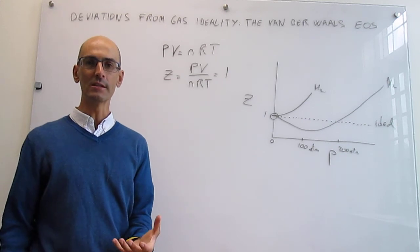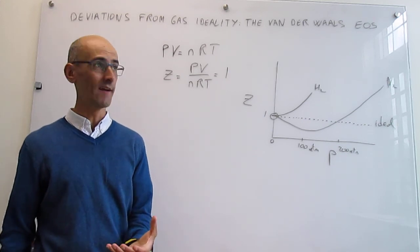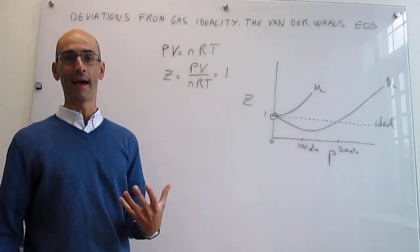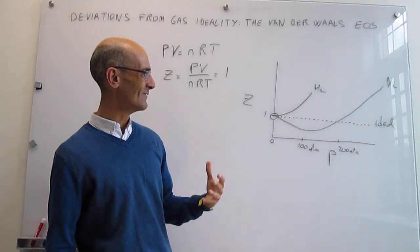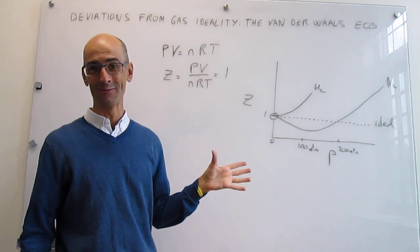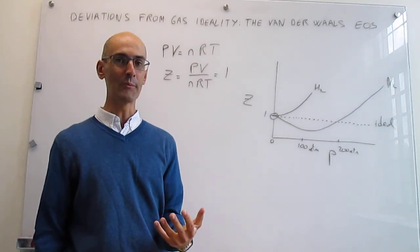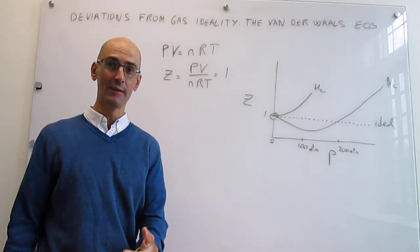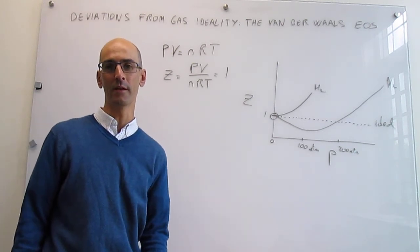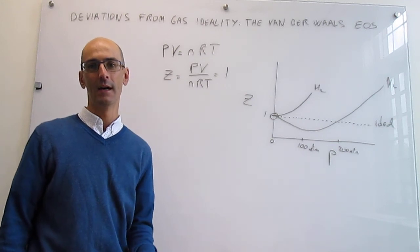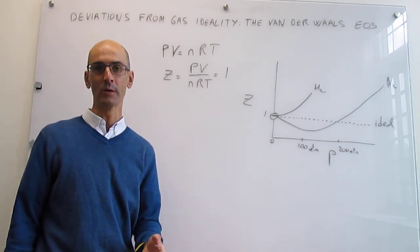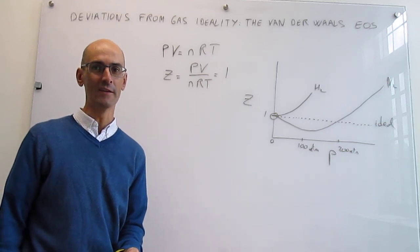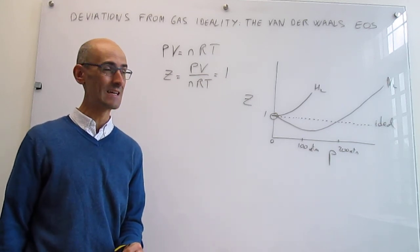The question is: are there equations that transcend the ideal gas equation of state and allow us to study gases not only under ideal gas conditions but also at higher pressures where breakdowns of ideality are important? The answer is yes, and one of the more important ones available is the Van der Waals equation of state. For this work, Van der Waals received the Nobel Prize in Physics in 1910.